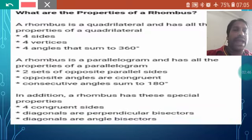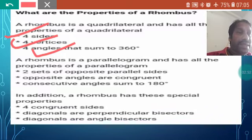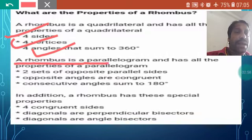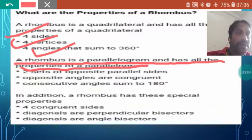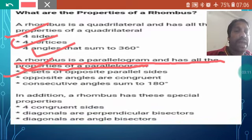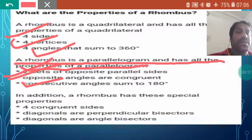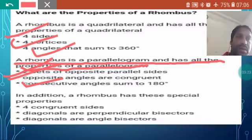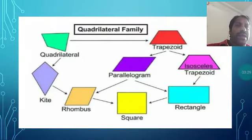A rhombus is a quadrilateral and has four sides, four vertices, and four angles whose sum is equal to 360 degrees. A rhombus is also a parallelogram and has all the properties of a parallelogram: two sets of opposite parallel sides, opposite angles are congruent, and consecutive angles sum to 180 degrees. These are the properties of a parallelogram which are also represented in the rhombus.